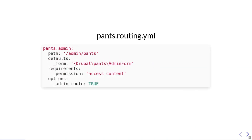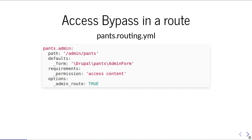Let's look at this pants routing YAML file. The route has a name at the top: pants.admin. It exposes something at a path called /admin/pants, and there is a form attached — the pants admin form. In order to access that admin form, you have to have the permission 'access content', and we define it as an admin route. Access content is a weird permission that shouldn't be here — this would be an access bypass in a route. Admin stuff should not use the access content permission.